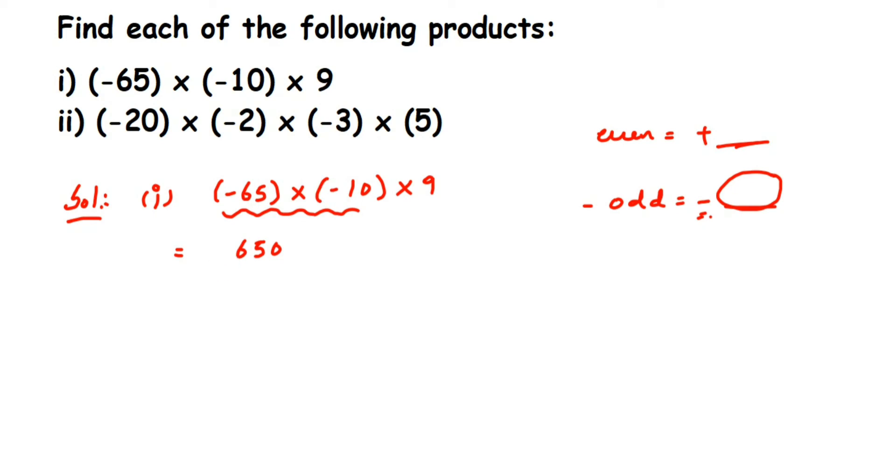It'll be a positive number - 650 is a positive number - then multiplied by 9, this will give us 5850. So that was the first question, like that we're going to solve the second one.